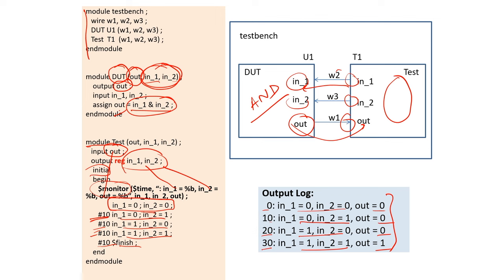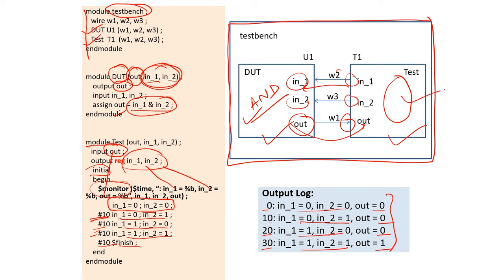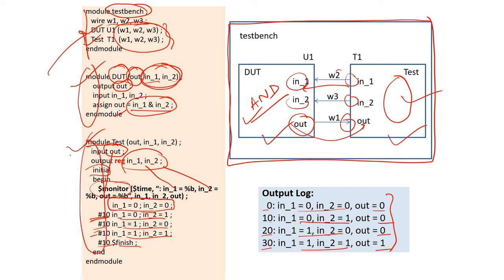In the overall test bench, you instantiate both the DUT module and the test module. I defined DUT as the AND gate module and the test as the test module, connected with wires W1, W2, W3. When you run this, it creates instances of both modules and executes: the test bench feeds inputs to the DUT, the DUT runs and produces output, and you print and verify whether the outputs match expectations.